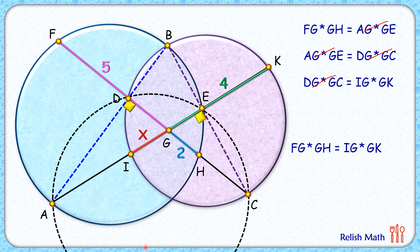Putting the values here: FG is 5 centimeters, GH is 2 centimeters, IG is what we have to find (X), and GK is 4 centimeters. Solving it, we'll get X as 2.5 centimeters, and that's our answer. I hope you enjoyed the solution. I will see you in the next video.